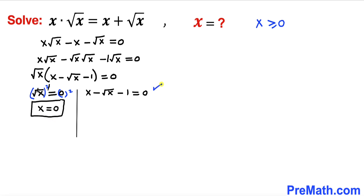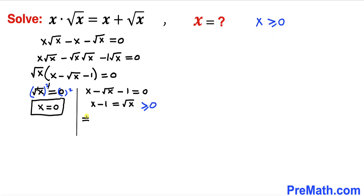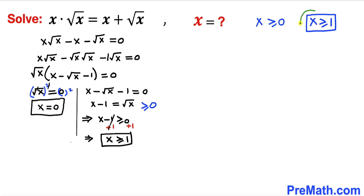Now let's focus on the second equation: x minus square root of x minus 1 equals 0. Let's move negative square root of x to the right hand side, giving us x minus 1 equals square root of x. Since x is greater than or equal to 0, square root of x is greater than or equal to 0, which means x minus 1 must be greater than or equal to 0. Adding 1 to both sides gives us x is greater than or equal to 1 — keep this condition in mind.